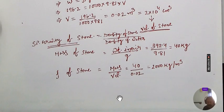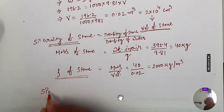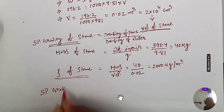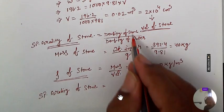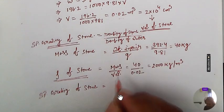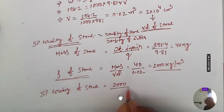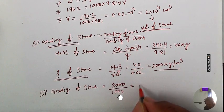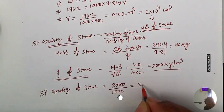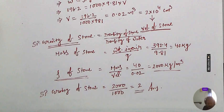Using the density of the stone in the specific gravity formula: specific gravity equals density of stone divided by density of water, which is 2000 divided by 1000, giving a specific gravity of 2. Thank you very much.